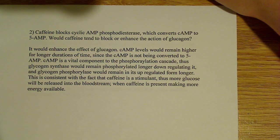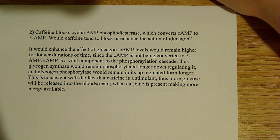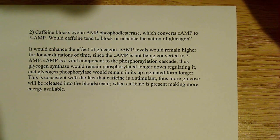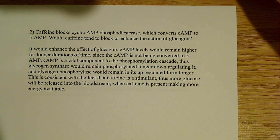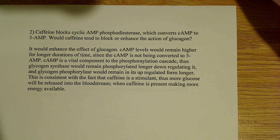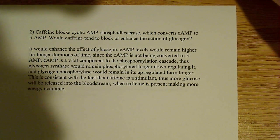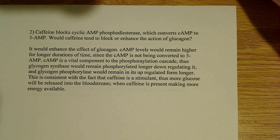Cyclic AMP is an important molecule in the phosphorylation cascade. Thus, glycogen synthase — the enzyme that synthesizes glycogen — would remain phosphorylated for longer periods of time, meaning it's downregulated. And because of reciprocal regulation, glycogen phosphorylase, the enzyme that breaks down glycogen, would remain upregulated for longer periods of time. This is consistent with caffeine being a stimulant — more glucose would be released into the bloodstream when caffeine is present, making more energy available.